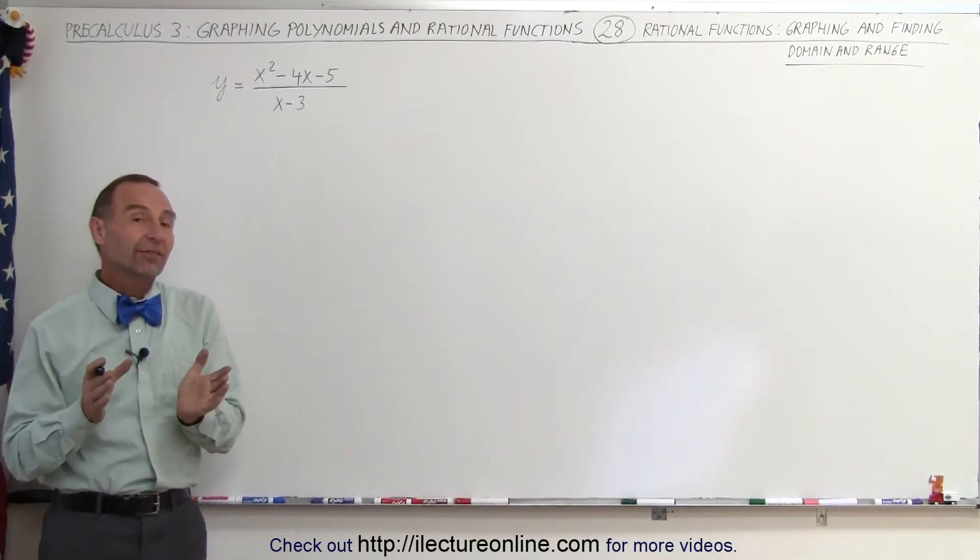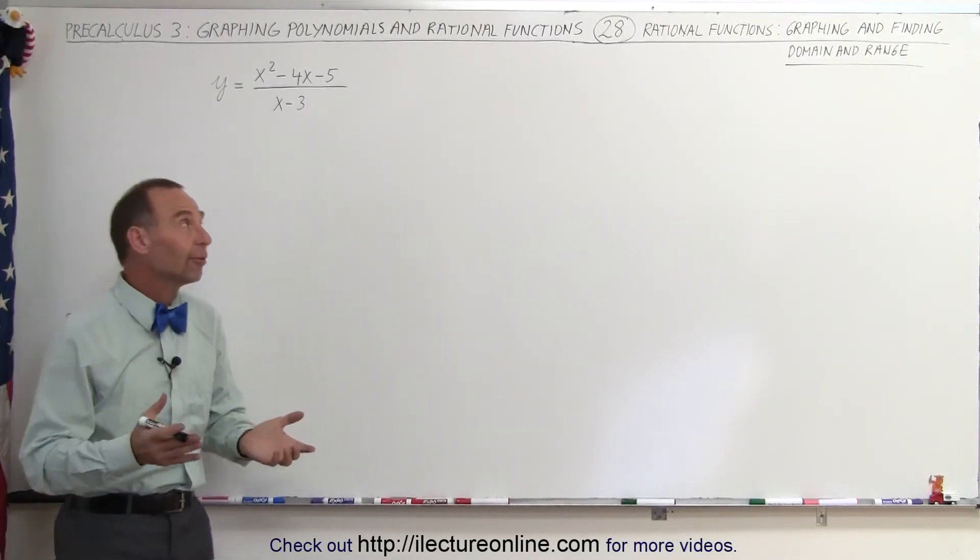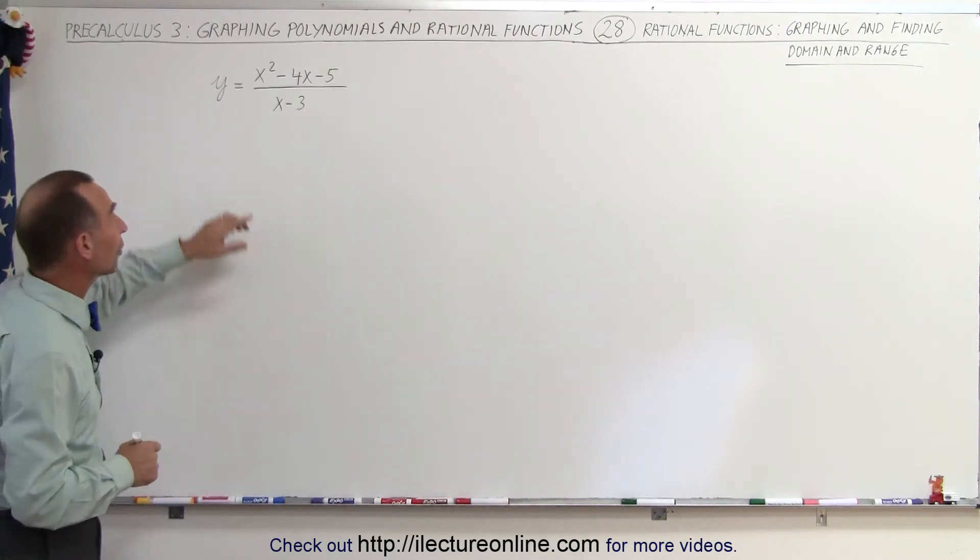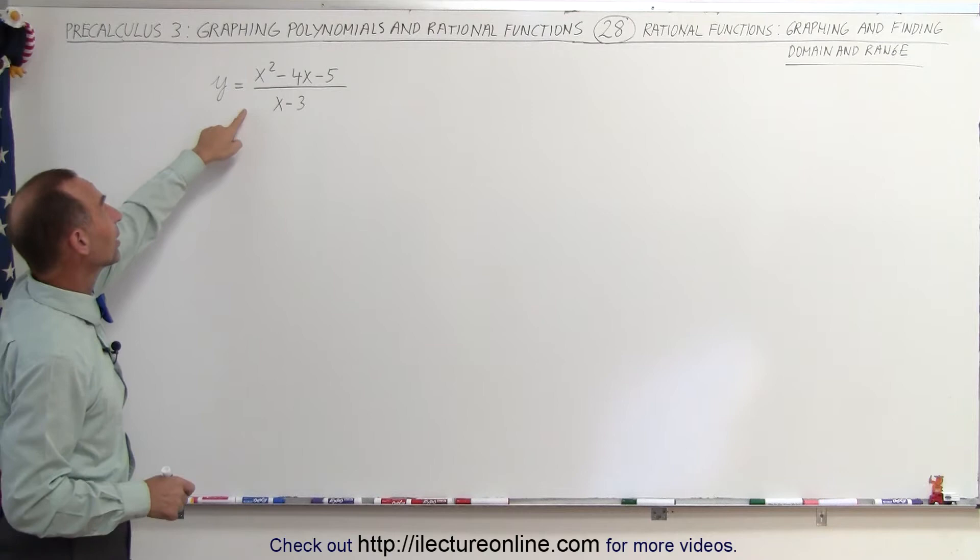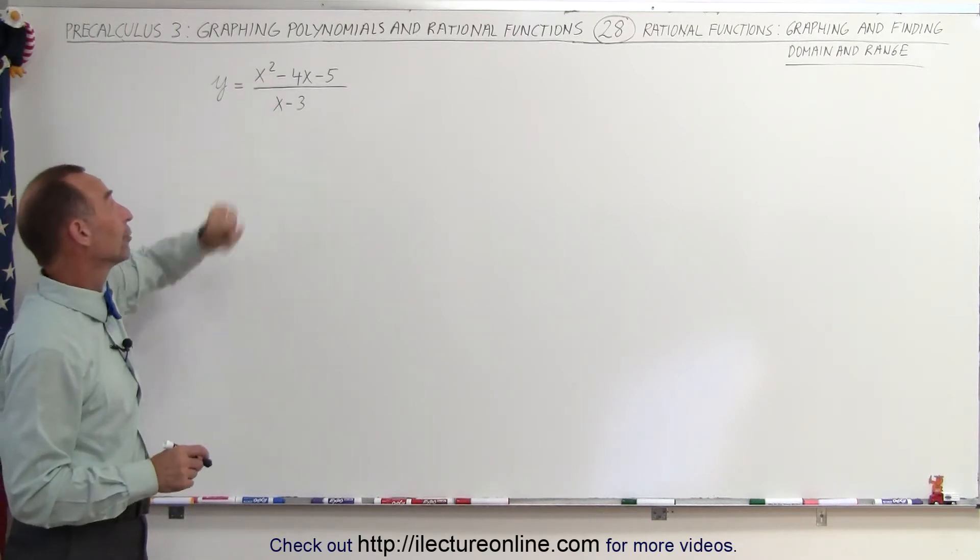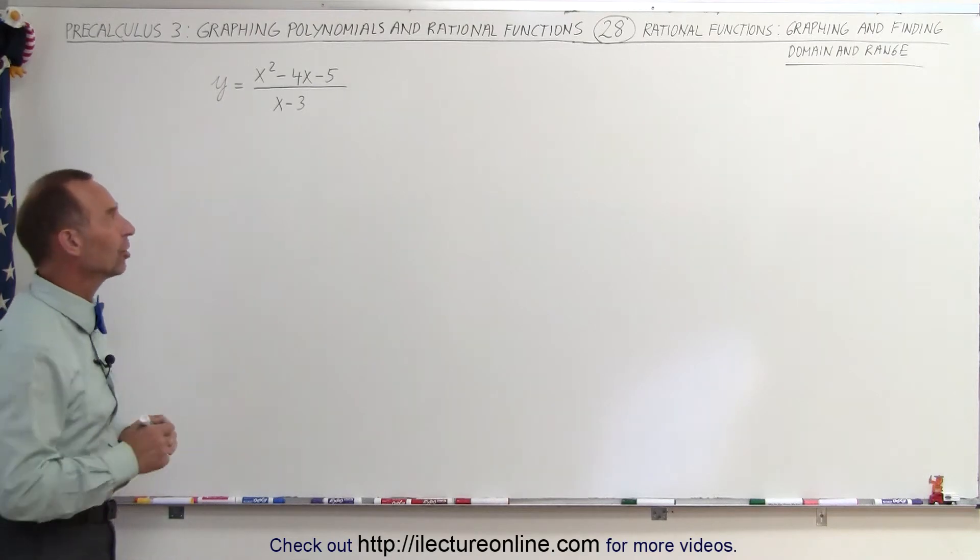Welcome to iLecture Online. Here's our next example of how to graph a rational function and find its domain and range. Here's the function. Notice in this case that the exponent in the numerator, x squared, is larger than the exponent in the denominator, x to the first power. And that does change things a little bit.